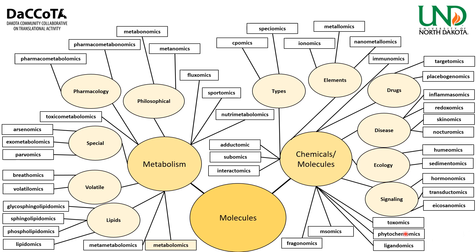More chemical terms: toxomics (toxins, also toxicomics), phytochemiomics (plant chemical compounds used to resist infections), ligendomics (ligands — ions or molecules binding to a central metal atom), MSomics (mass spectrometry data), and fragmentomics (small, relatively simple molecules — different from fragmentomics meaning small pieces of DNA). Ecology chemicals: humiomics (chemical compounds of soil humus) and sedimentomics (sediment organic matter).